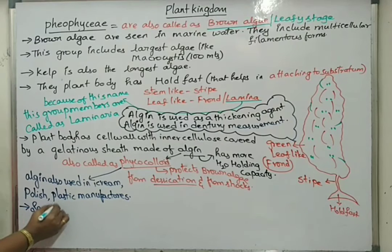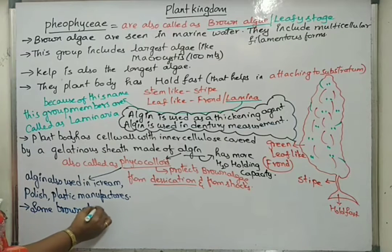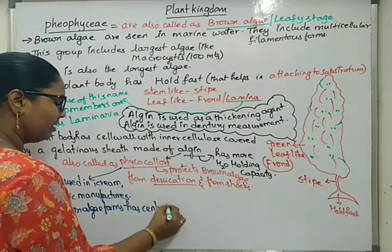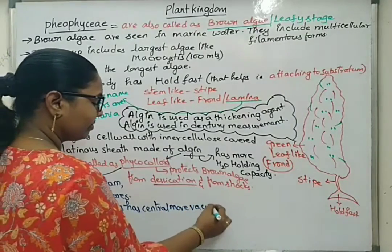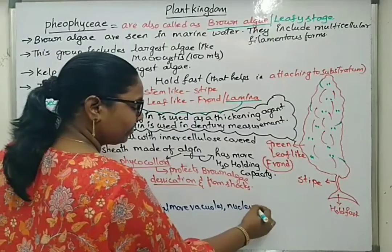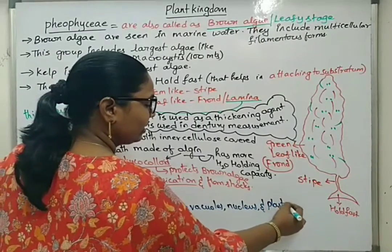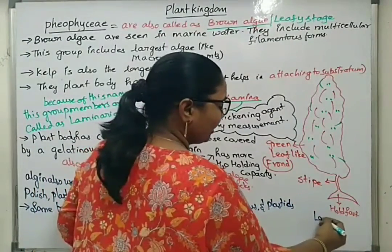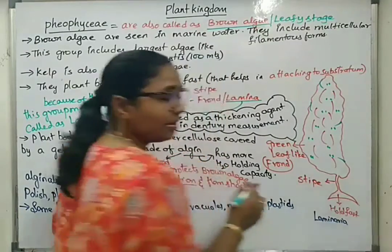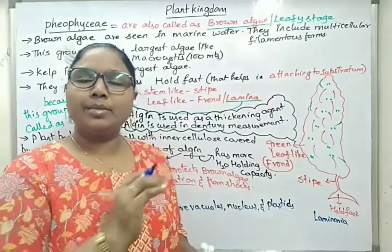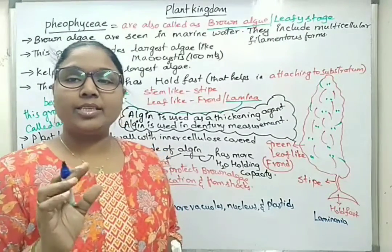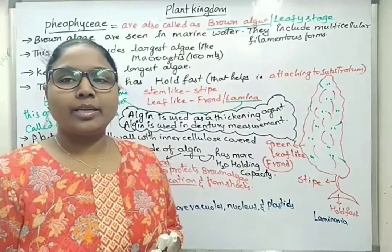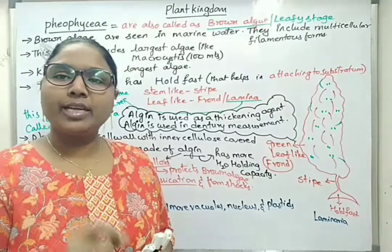Some brown algae forms have central vacuoles, nucleus, and plastids in the protoplast. The structure of Laminaria and diagrammatic representation of a few members is very important, because sometimes they give the diagram and ask us to identify the name of that particular algae.